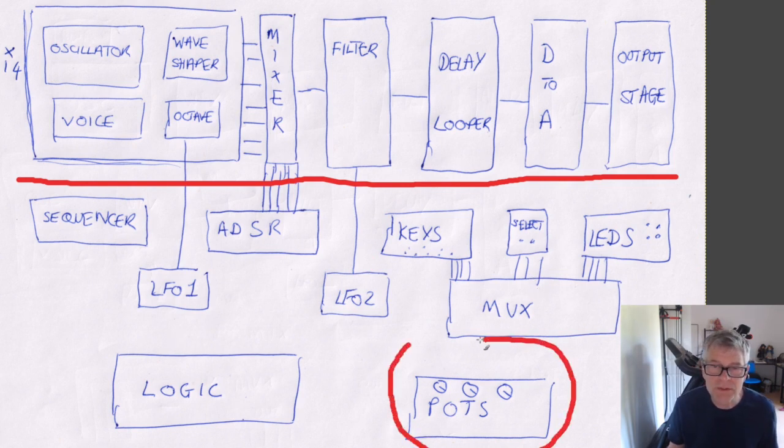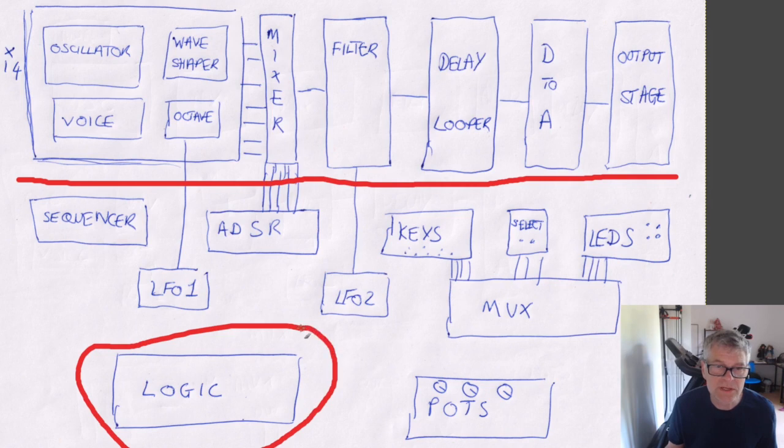There's some pots, analog pots, three of them. Again, we need the logic here to decide what those pots are actually going to do and kind of multiplex their functionality. And the final thing is the actual logic. This is the thing that holds all of this together and delivers all the control to the actual oscillators.